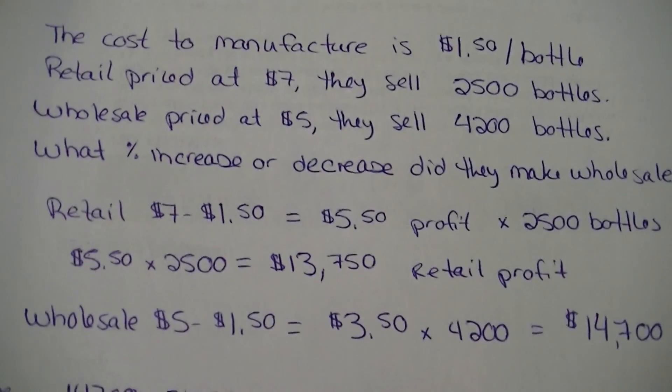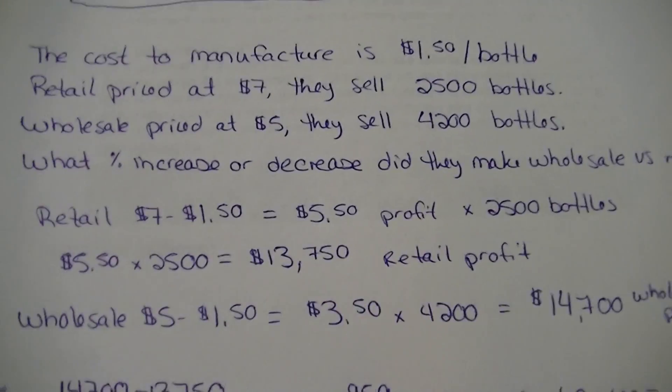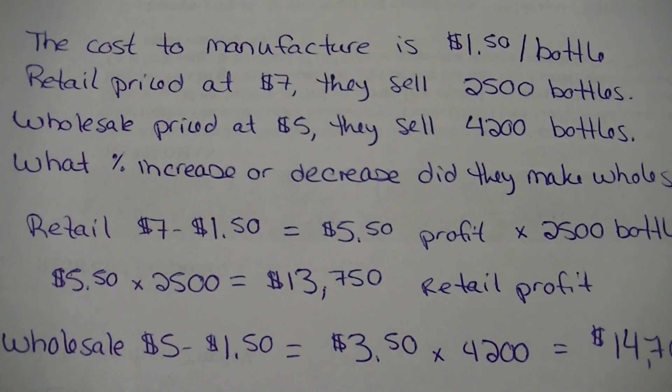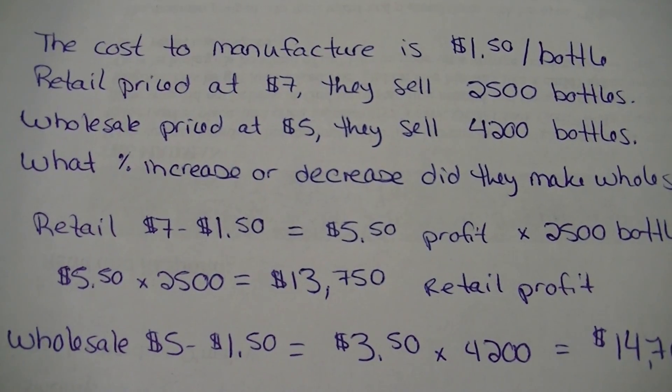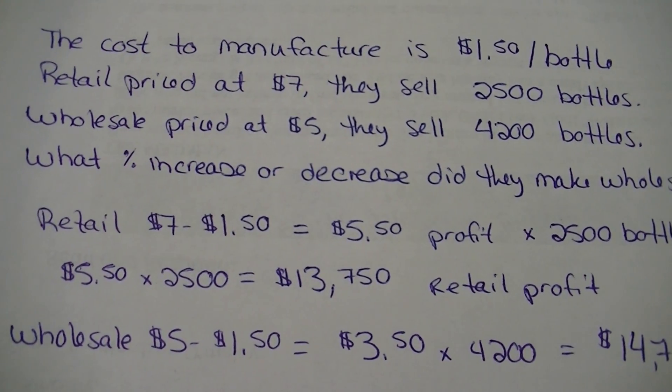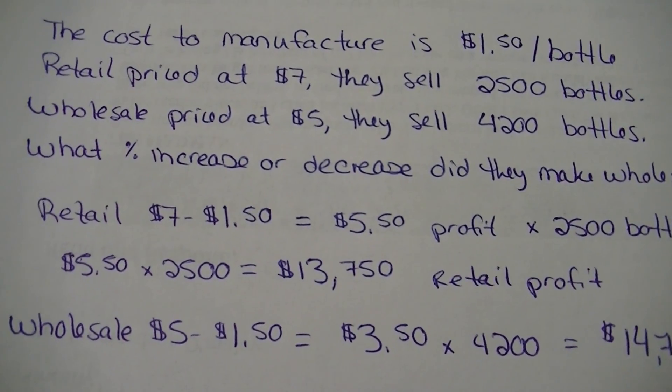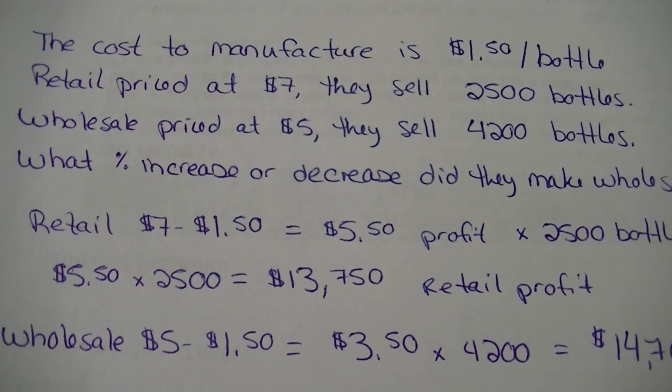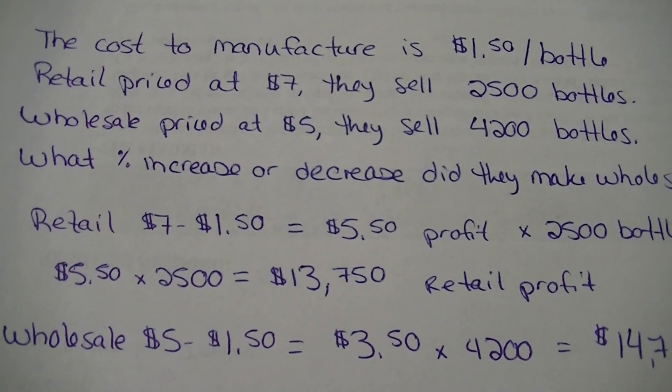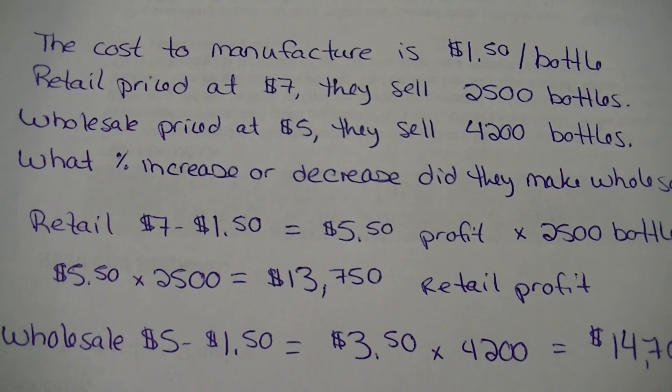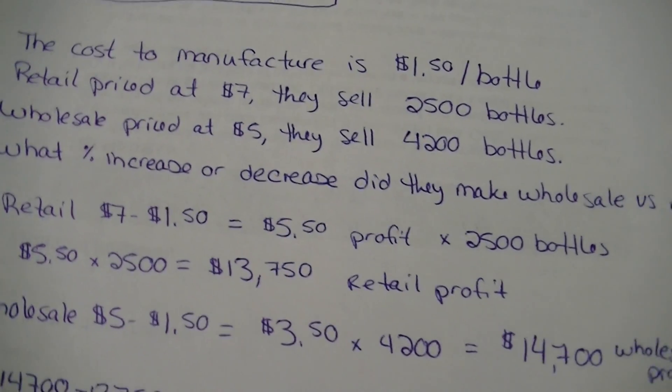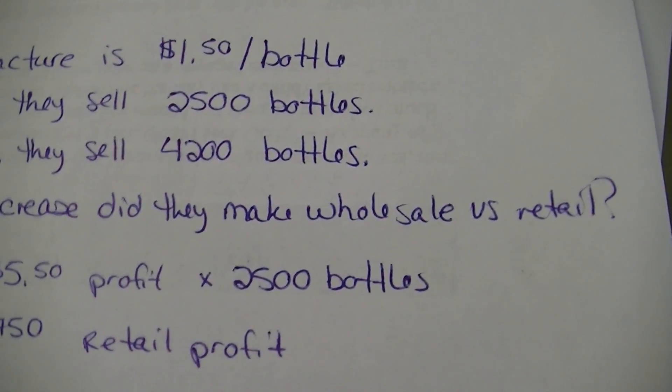We're going to move on to this big fun stuff. All right. So the cost to manufacture is $1.50 per bottle. Retail priced at $7, they sell 2,500 bottles. Wholesale priced at $5, they sell 4,200 bottles. What percent increase or decrease did they make going wholesale versus retail?